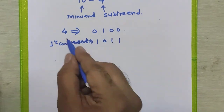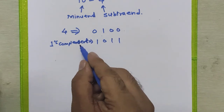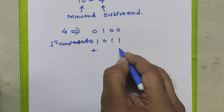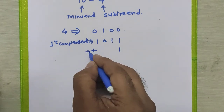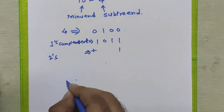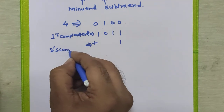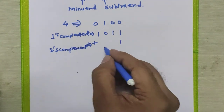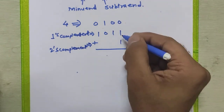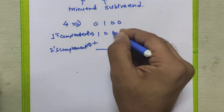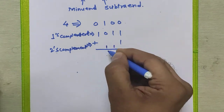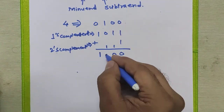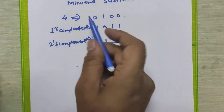To get the two's complement, we just have to add one to the one's complement. So we add one to 1 0 1 1. One plus one is zero with carry one, one plus one is zero with carry one, zero plus one is one, and the leading one stays as it is.